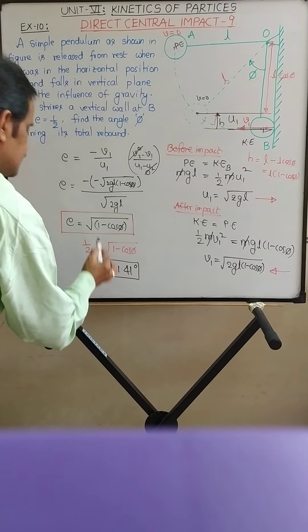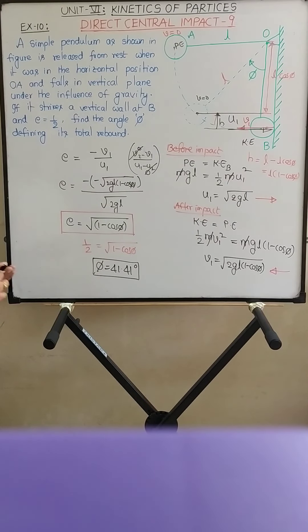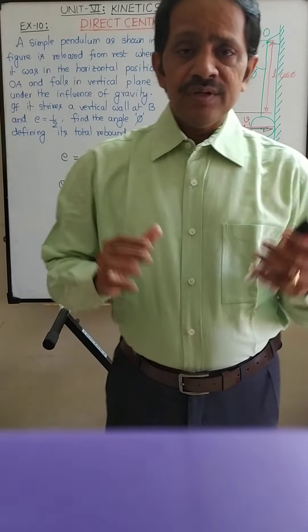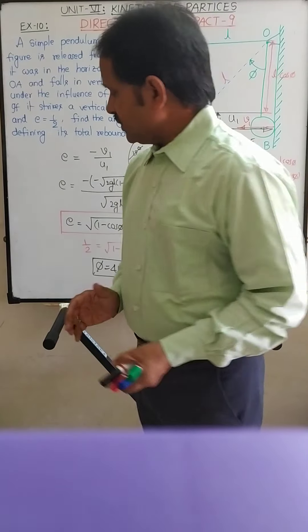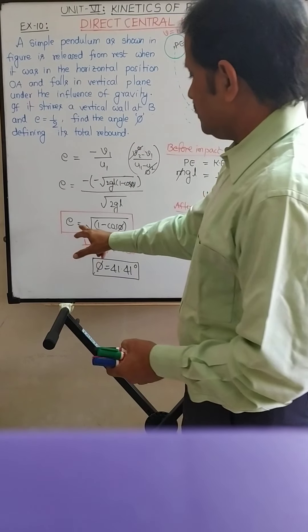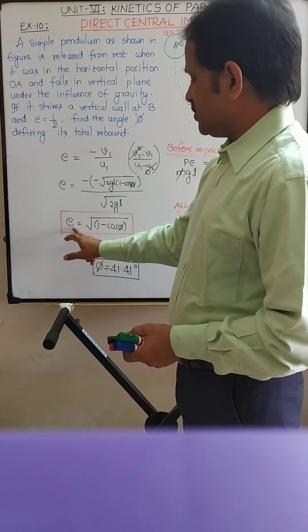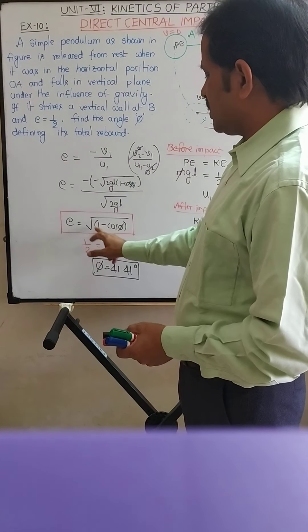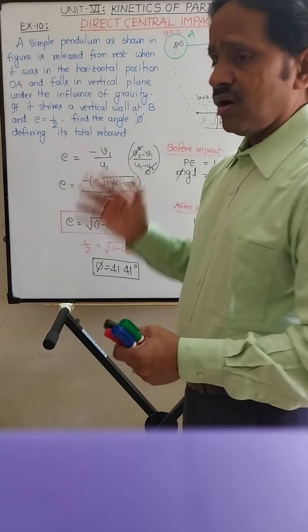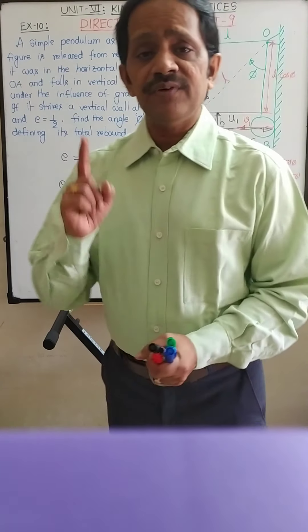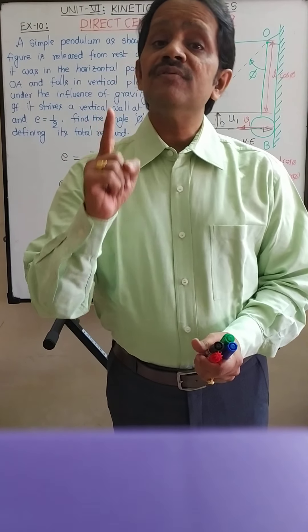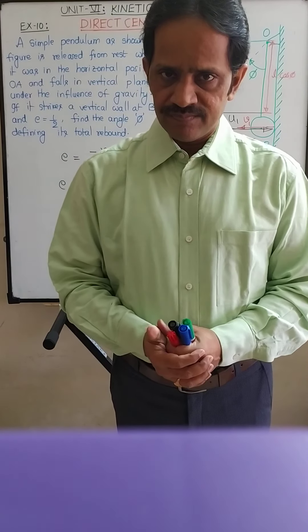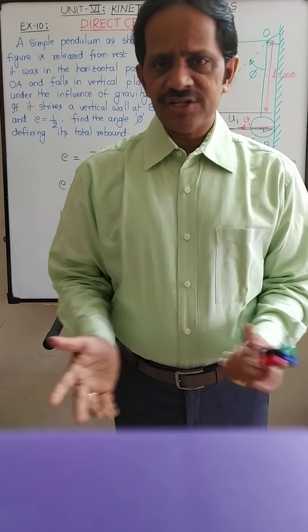So φ = 41.41° is the angle of rebound. Simply remember this formula: the coefficient of restitution equals √(1 − cosφ), where φ is the angle of rebound.